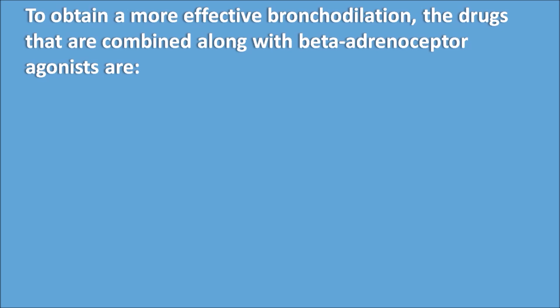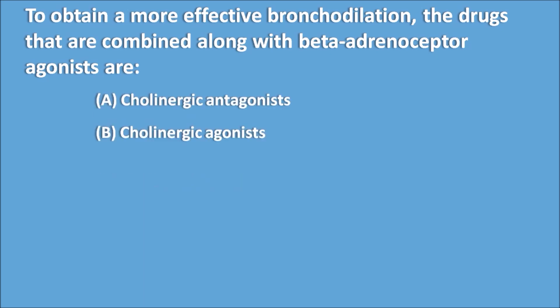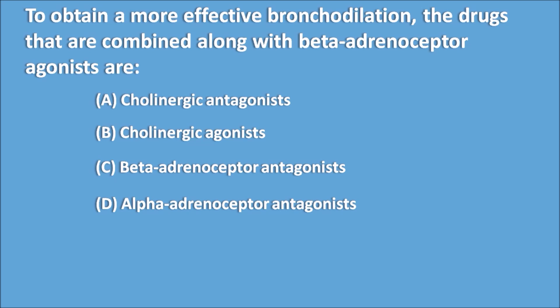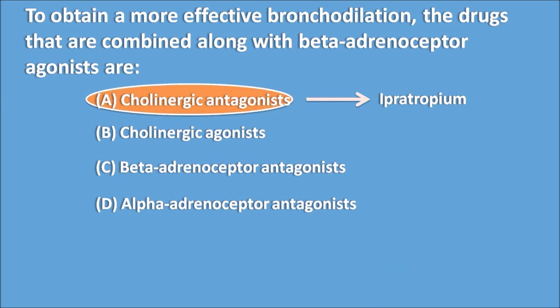To obtain more effective bronchodilation, the drugs combined along with beta-adrenoceptor agonists are: A: cholinergic antagonists, B: cholinergic agonists, C: beta-adrenoceptor antagonists, D: alpha-adrenoceptor antagonists. The right answer is A, cholinergic antagonists. Drugs like ipratropium can be combined with beta-2 agonists. Particularly in COPD, cholinergic antagonists are used along with beta-2 agonists when beta-2 receptors are ineffective alone.